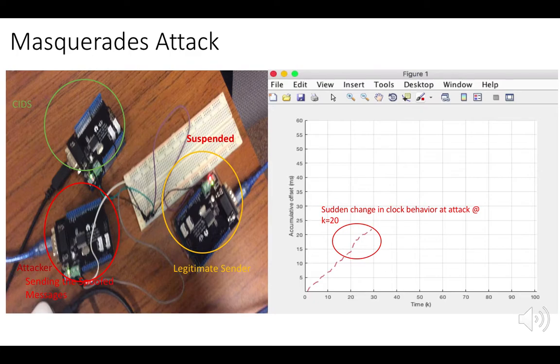Now we are going to observe the clock behavior when the Advanced Masquerade Attack is launched. This is an attack proposed by us which explores weaknesses in clock-based intrusion detection systems.